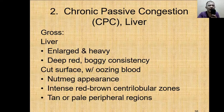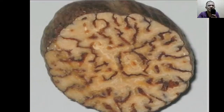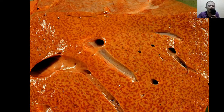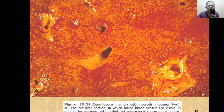Grossly, the liver is enlarged and heavy, deep red and boggy in consistency, and the cut surface is oozing with blood — what we call nutmeg appearance. This is described as intense red-brown centrilobular zones with tan or pale peripheral regions, very much like the appearance of a nutmeg. You see dark areas — these are red blood cells leaking out of the sinusoids.